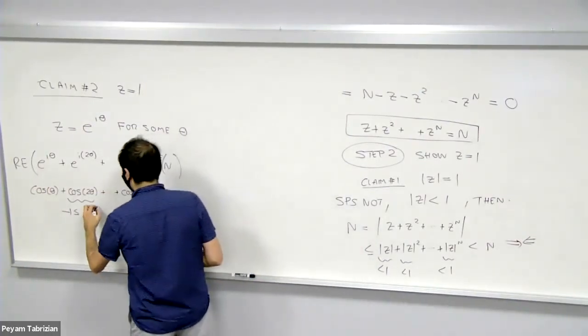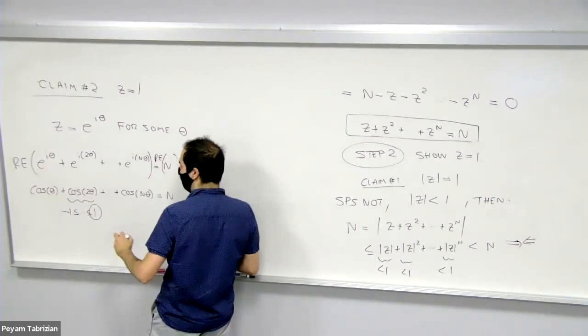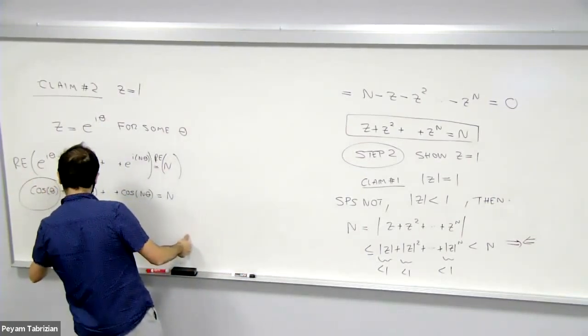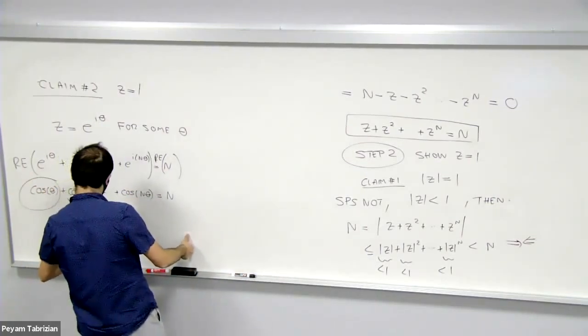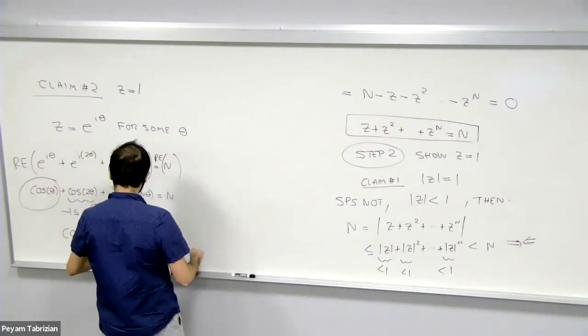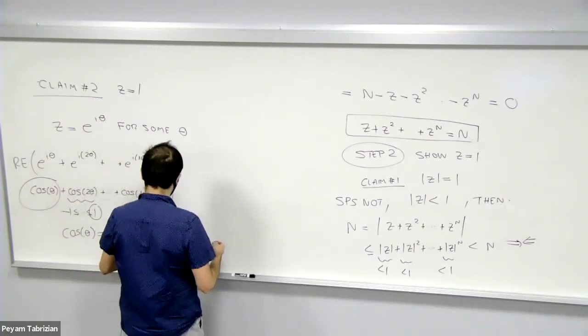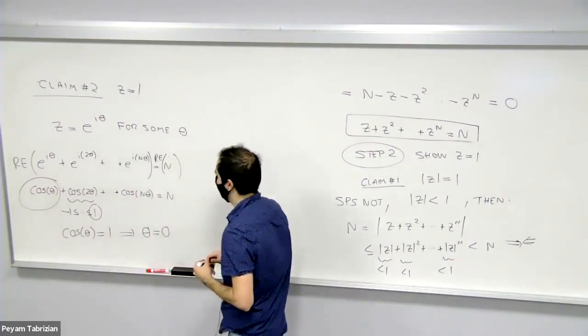So in particular, each term must be 1. So the first term also must be 1. So cosine of θ must be 1, which in this case, it just means θ must be 0.